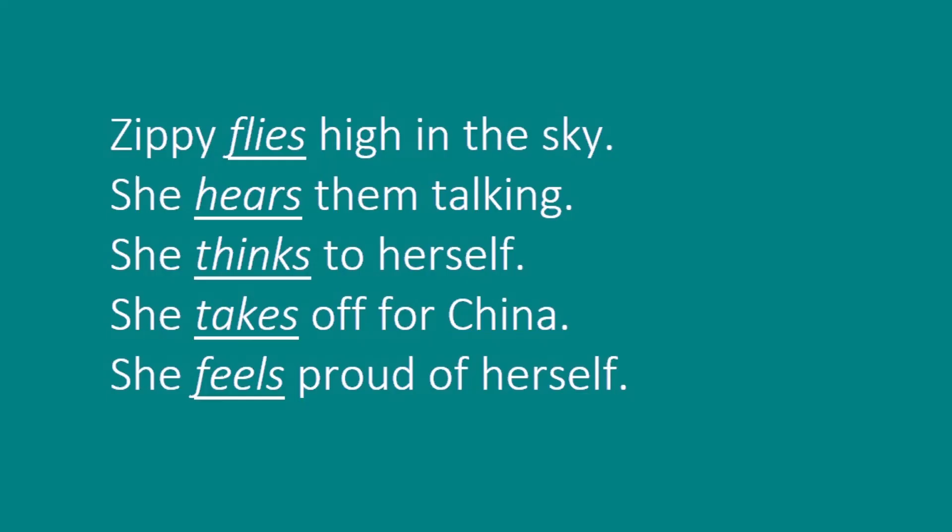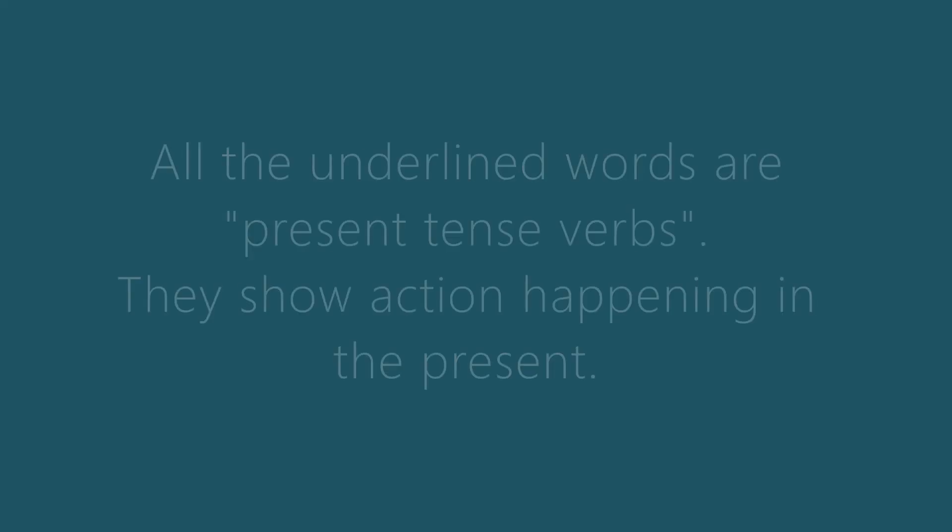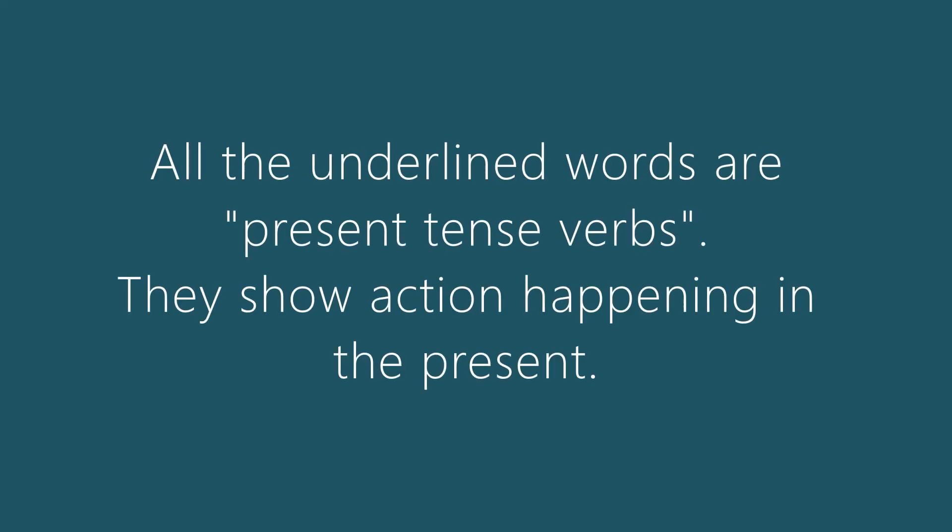Zippy flies high in the sky. What's the verb in this sentence? Very good. It's flies. And in the next one, She hears them talking. It's hears. She thinks to herself. Yeah, thinks. She takes off for China. Takes as a verb. She feels proud of herself. Feels as a verb. So, all these underlined words are present tense verbs because they show action happening in the present.